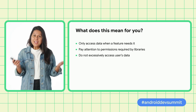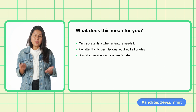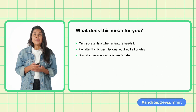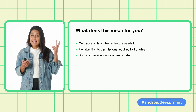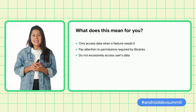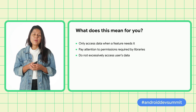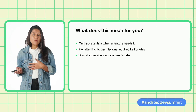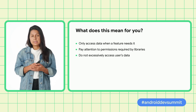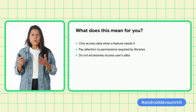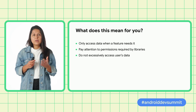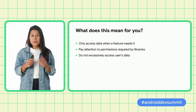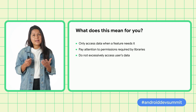A few takeaways for developers when it comes to permission accesses. First, make sure your app is only accessing data when a feature needs it. Second, pay attention to permissions added by libraries in your merged manifest — for example, you could use the merged manifest to see what permissions are used by what library dependencies. Please refer to our blog post titled 'Getting to Know the Behaviors of Your SDK Dependencies.' And third, make sure you're not excessively accessing users' data.